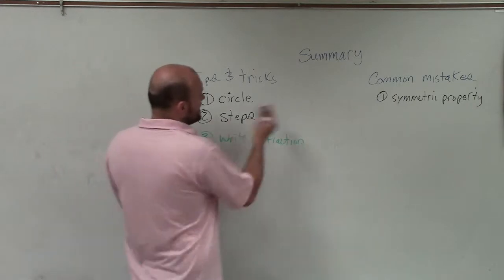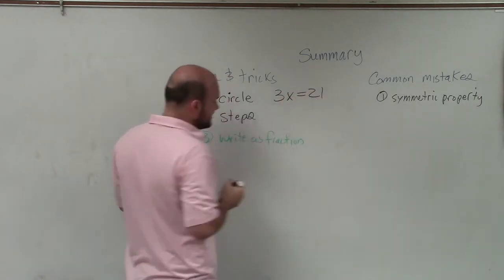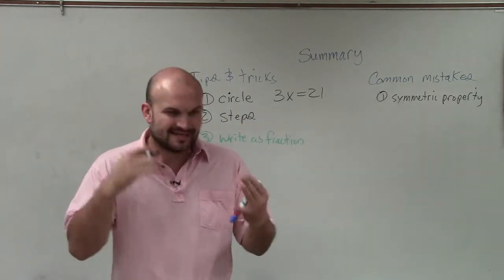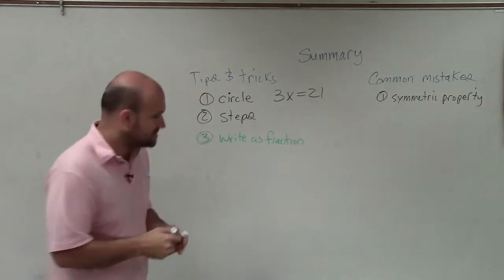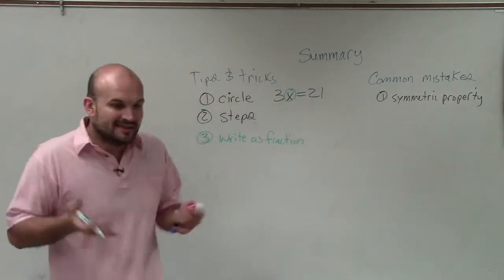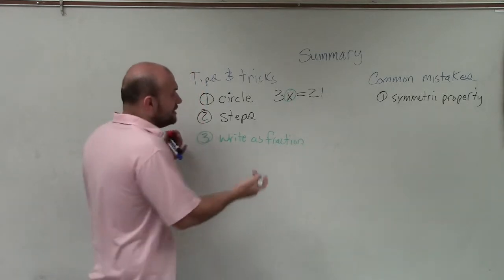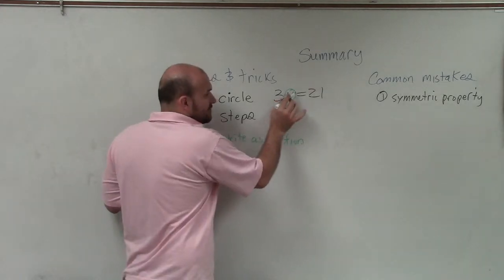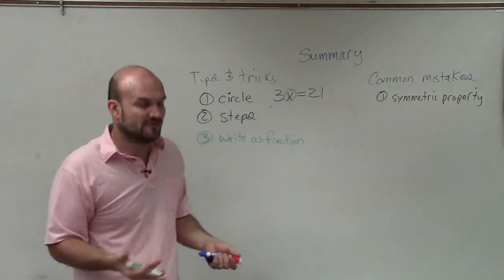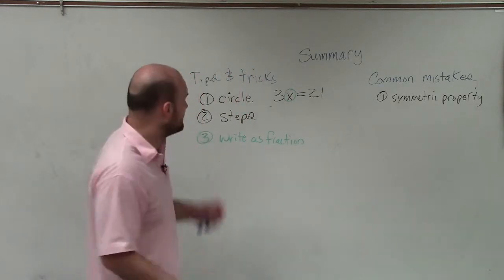Some tips and tricks: what I think is sometimes helpful, since students get confused with those x's, is circling your variable. That's the variable I want to get by itself, to isolate that variable. So circle it and say I need to get this by itself. Right now it's being multiplied by 3, so I'm going to divide by 3 on both sides to solve. Sometimes adding something else in there to help you solve can work.